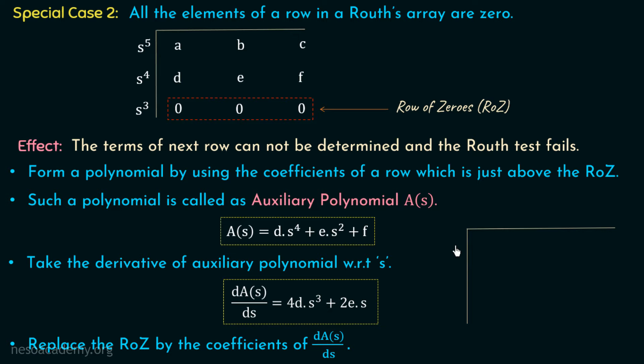In step 3, we replace the row of zeros with the coefficients of dA(s)/ds. So in the Routh array with rows s^5, s^4 (coefficients a, b, c), and s^3 which was a row of zeros — we replace the s^3 row with 4d, 2e, and 0. We can then calculate the coefficients of the remaining rows and complete the Routh array.